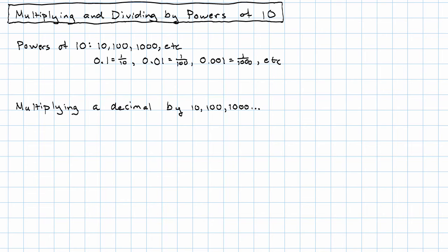So let's see what happens when we multiply a decimal by a power of 10. Let's look at a concrete example: 27.0815 times one hundred.